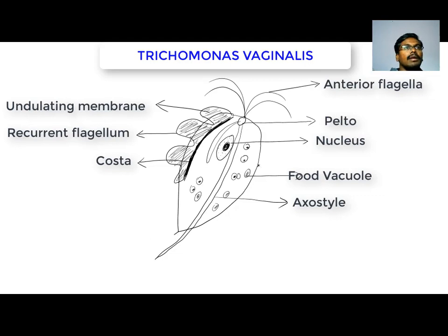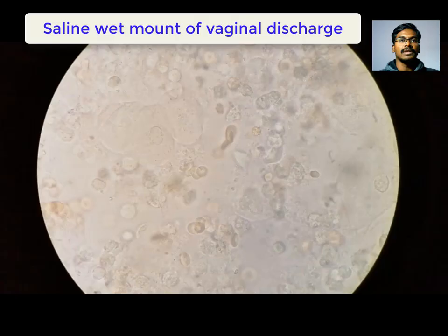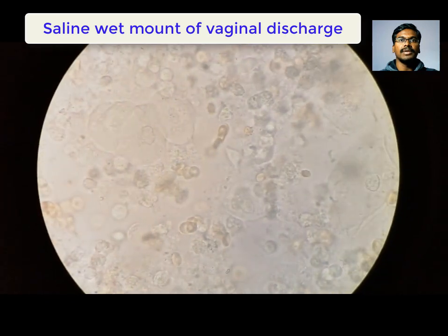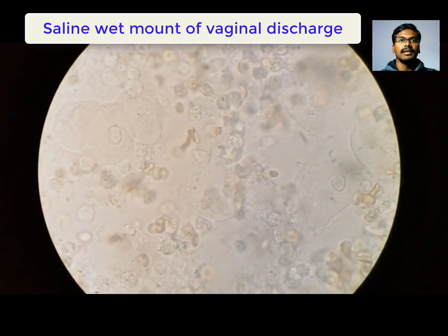There is one more flagellum called the recurrent flagellum, which runs along the undulating membrane. That finishes the diagram of Trichomonas vaginalis. Now let's see how Trichomonas vaginalis appears in a clinical specimen.